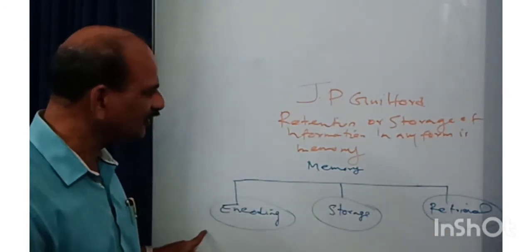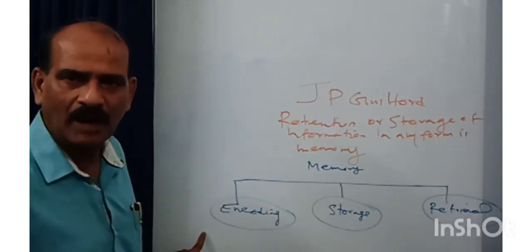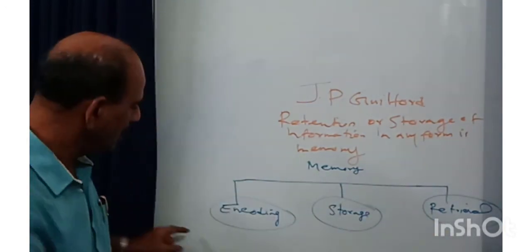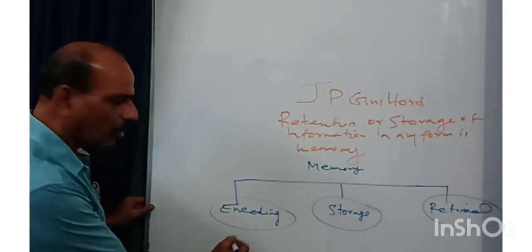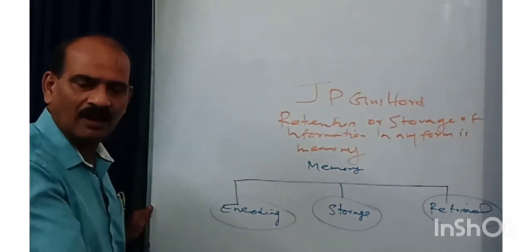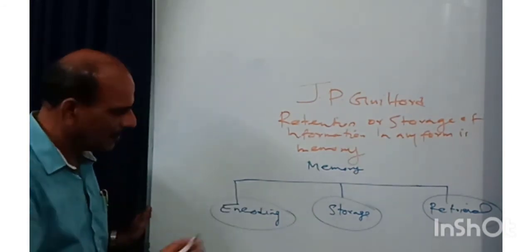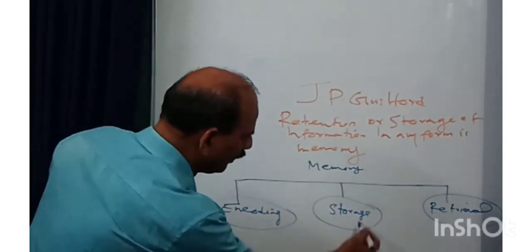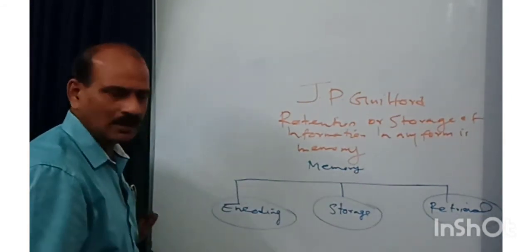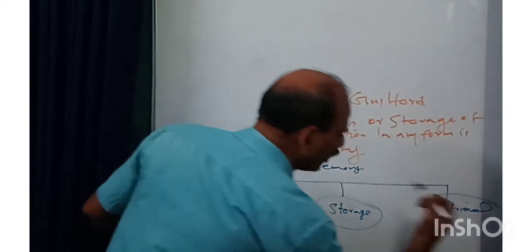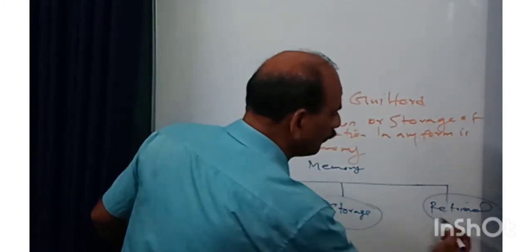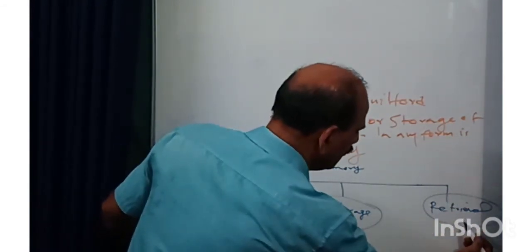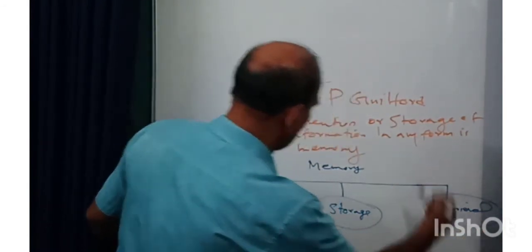These are the three phases of memory. They are: encoding — placing of information; storage — stocking of information; and retrieval — the ability to reproduce information.